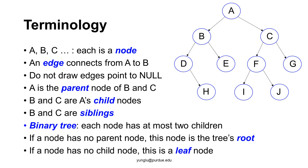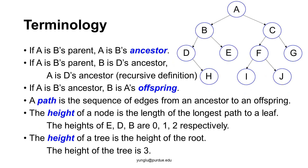If A is B's parent, then A is B's ancestor. If A is B's parent and B is D's ancestor, then A is also D's ancestor. Please notice that this is a recursive definition. If A is B's ancestor, then B is A's offspring. A path is the sequence of edges from an ancestor node to an offspring node. In a tree, there is exactly one path between a pair of ancestor and offspring nodes.